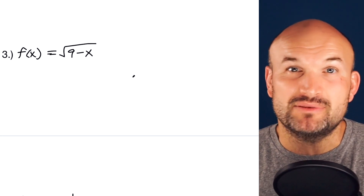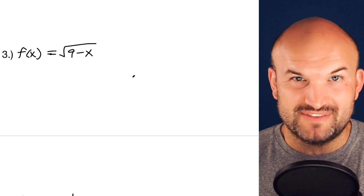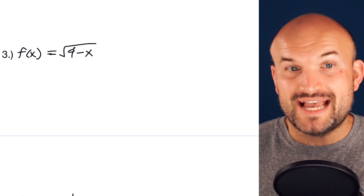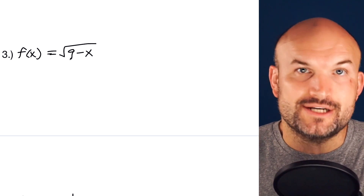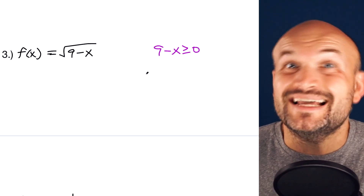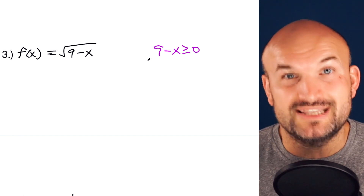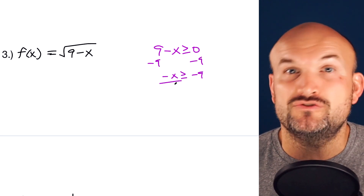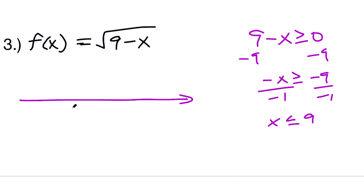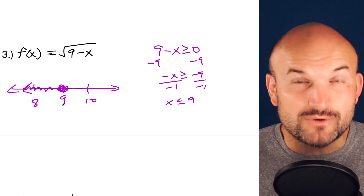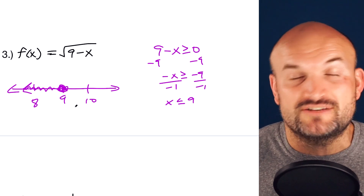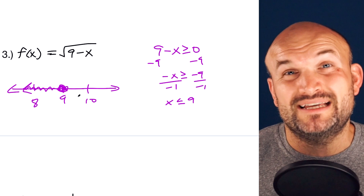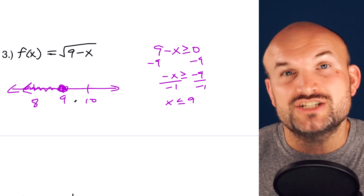In example three, we have basically the same setup, but notice we have 9 − x, which makes a small change. I set the radicand greater than or equal to zero: 9 − x ≥ 0. When solving, remember that subtracting nine from both sides and dividing by negative one requires you to flip the inequality sign. The result is x ≤ 9, so the domain is (−∞, 9].